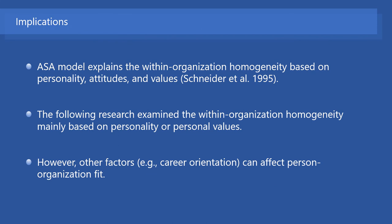The ASA model explains the progress of within-organization homogeneity based on certain attributes. Schneider and colleagues stated that the attributes of interest are personality, attitudes, and values, using the word personality to subsume these characteristics. The following research examined within-organization homogeneity mainly based on personality or personal values. However, various factors other than personality and personal values might also matter — for example, career orientation can affect person-organization fit and within-organization homogeneity.